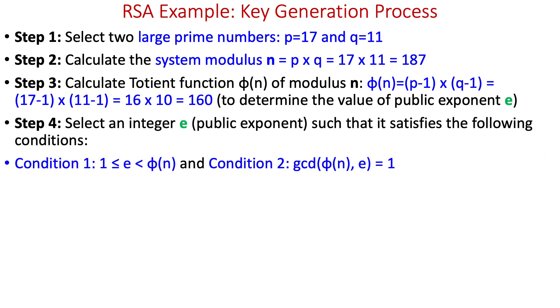In step four, we select an integer e as the public exponent of the public key, satisfying two conditions. Condition one: it should be greater than 1 and smaller than phi(n) = 160.